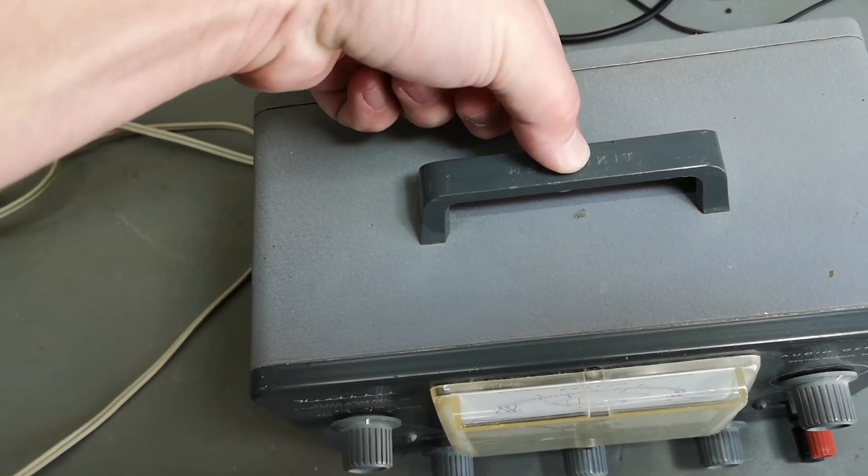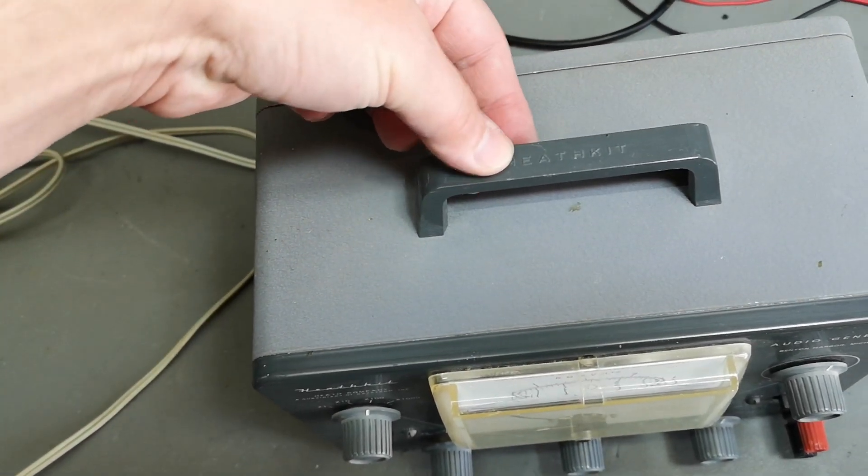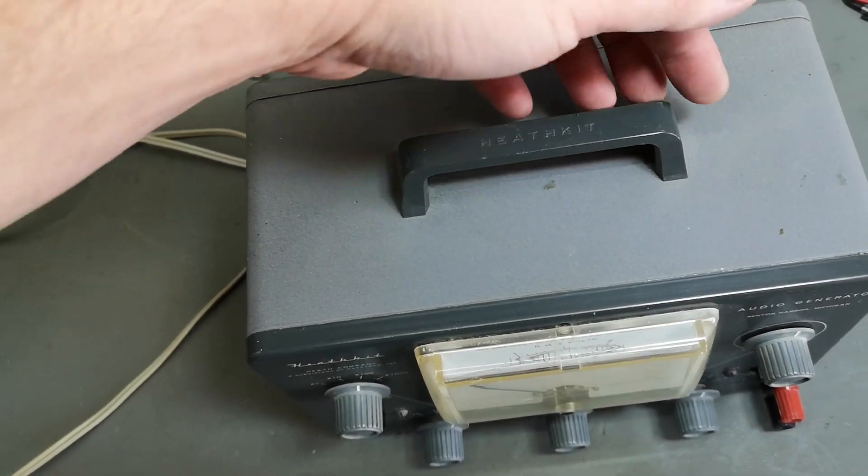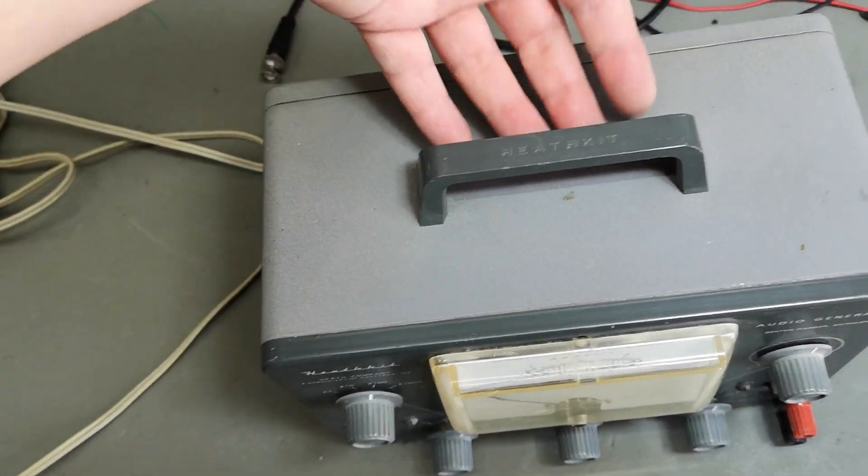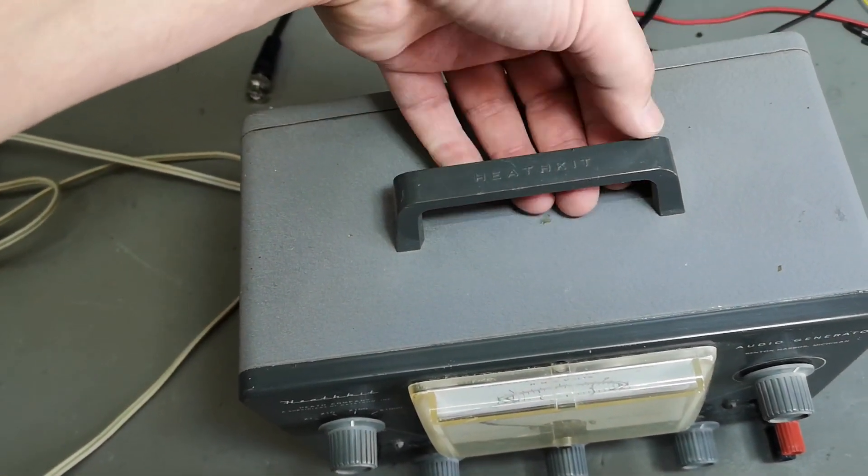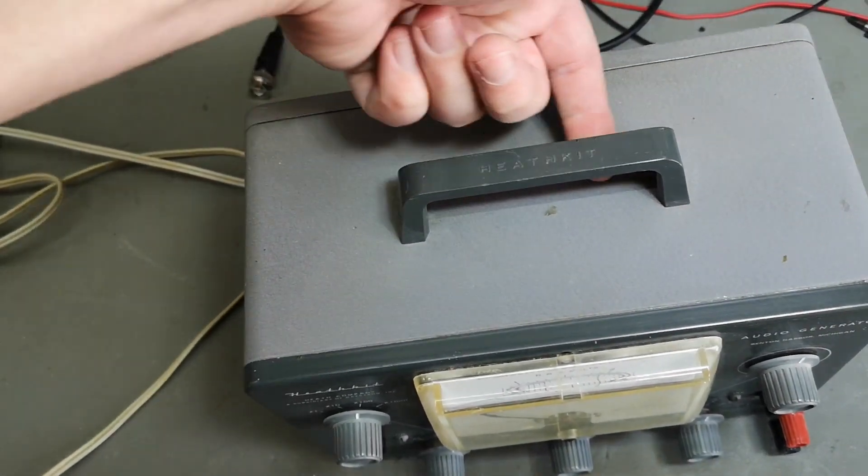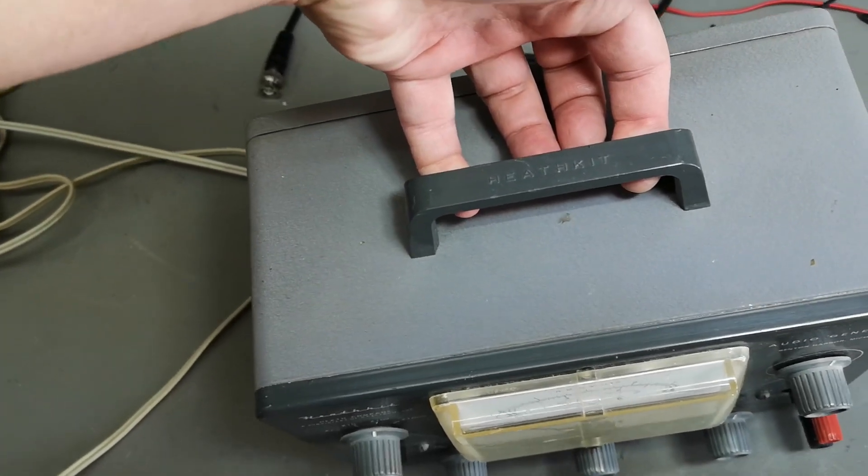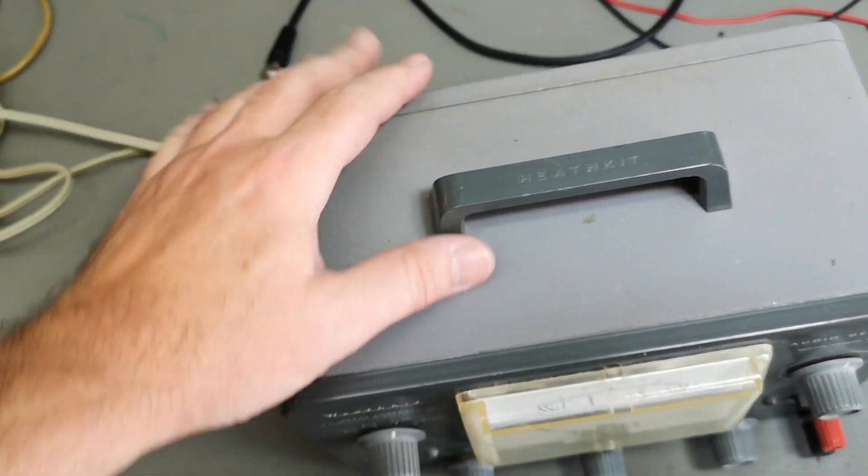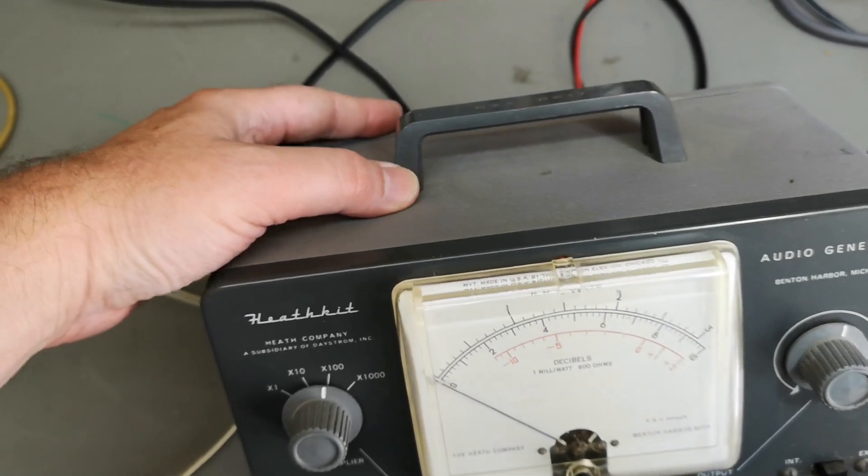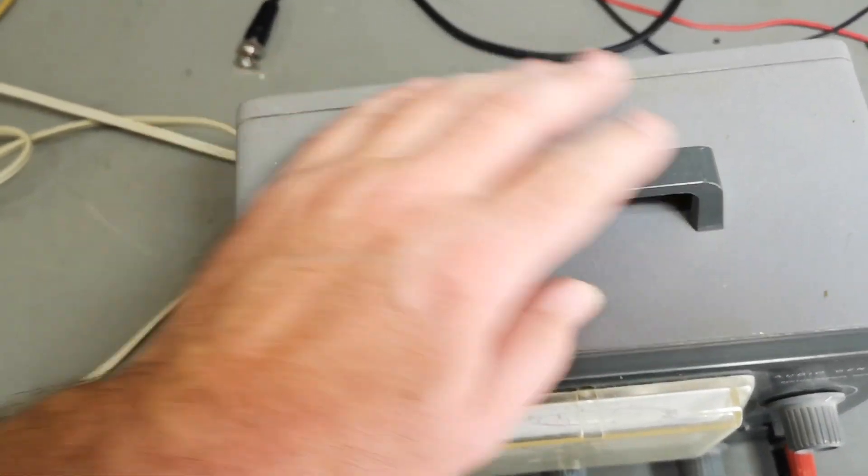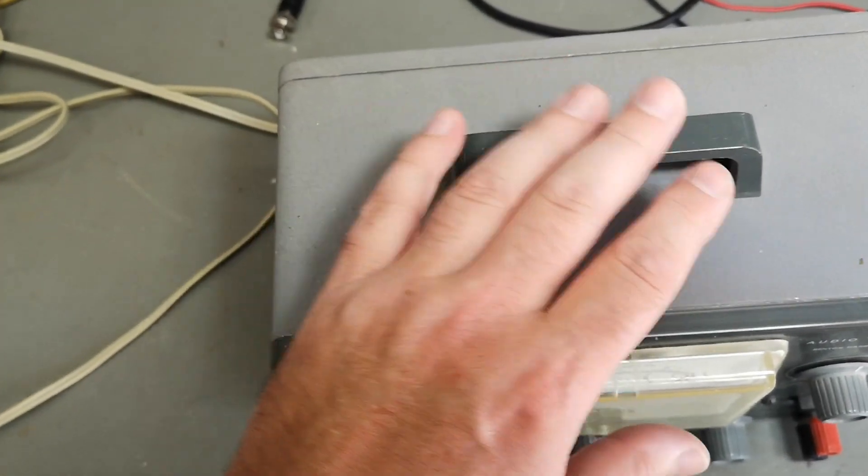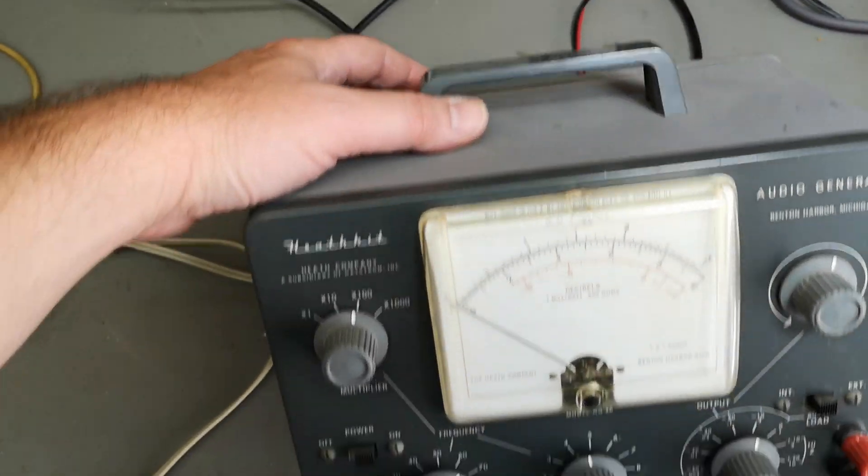By the way, about those Heathkit handles: if you take them here in the middle and try to lift, they can crack. So when you lift and handle old Heathkit stuff, always take your fingers like this all the way out here and have most weight out at the sides. This way you're not going to crack the handles. I really like it to be as original as possible without any cracked parts, so just take care of your good old stuff.